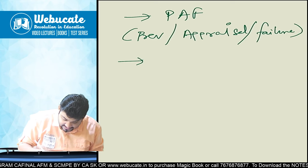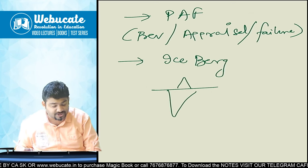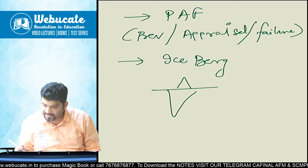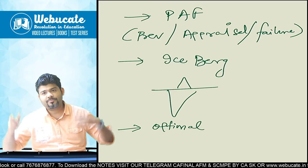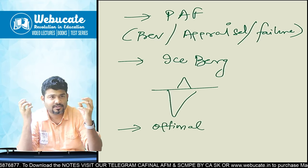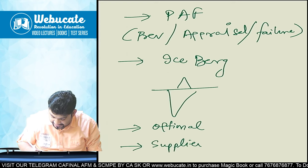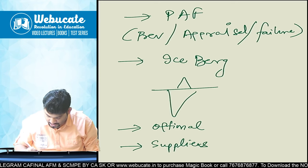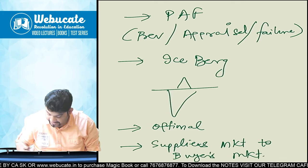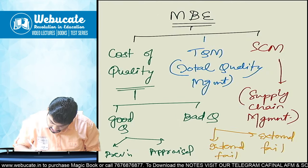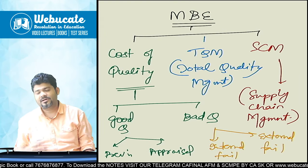After the PAF model, we saw the iceberg model, which tells us that the hidden costs are much higher than the apparent costs above the sea level. We also covered optimal cost of quality — what is the right amount of cost of conformance and cost of non-conformance — and lastly, the movement from supplier's market to the current buyer's market.